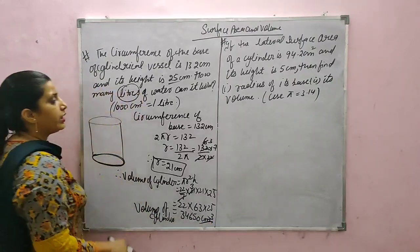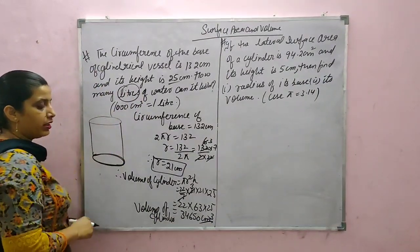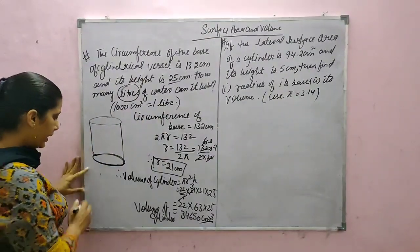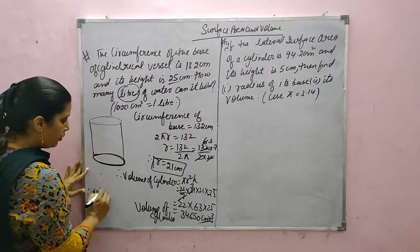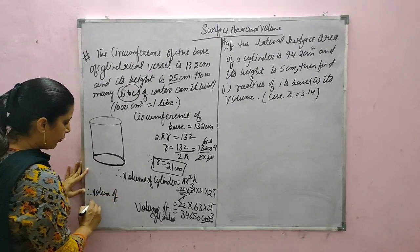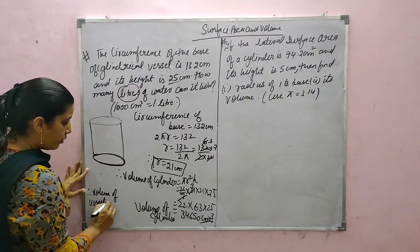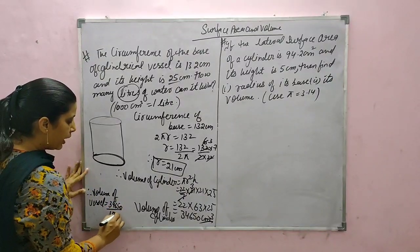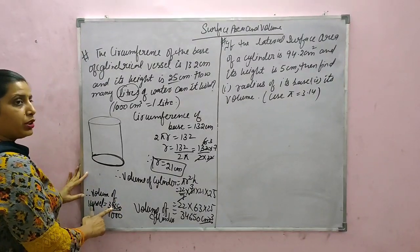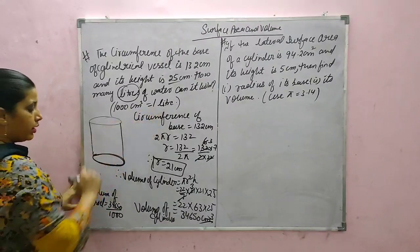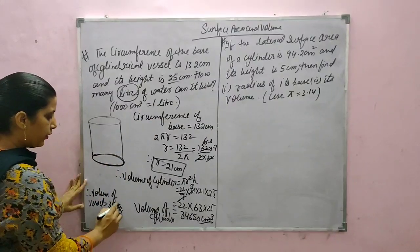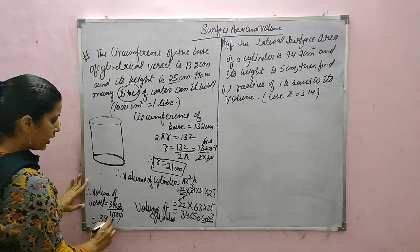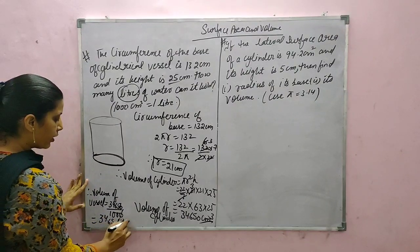We have to change this from cm cube into litres. The conversion is 1000 cm cube equals 1 litre. So volume of vessel equals 34650 divided by 1000, which gives 34.65 litres.